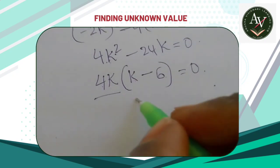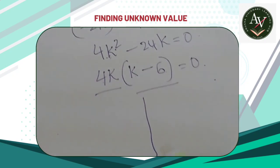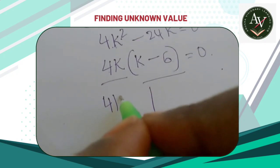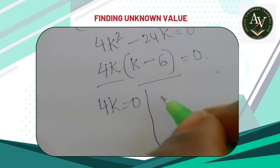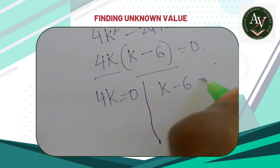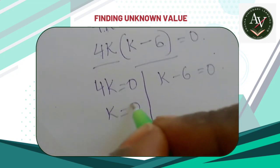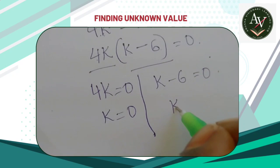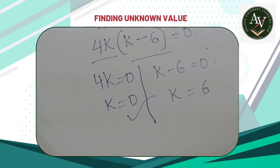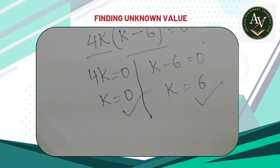Now we can write these two terms equal to zero. 4k equals zero and k minus 6 equals zero. Therefore, k equals zero and k equals six. These are the unknown values of k.